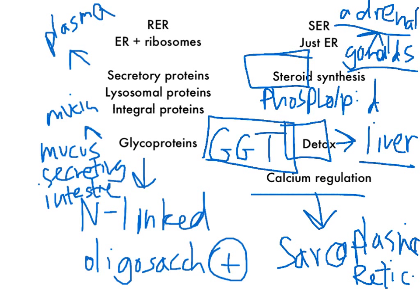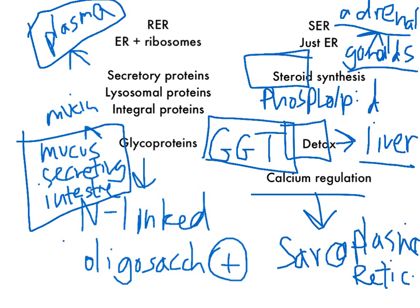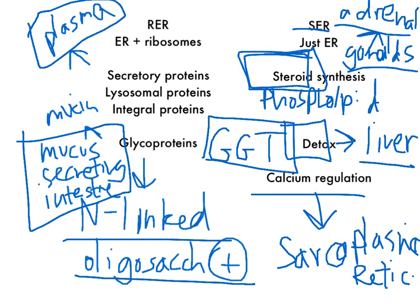Quick review: the RER has ribosomes and makes proteins outside the cell — secretory proteins, lysosomal proteins, and integral proteins. Plasma cells are an example for secretory proteins like antibodies; mucus-secreting cells for glycoproteins. Glycoproteins are made via N-linked oligosaccharide addition. RER in neurons forms Nissl bodies, which create choline acetyltransferase and peptide neurotransmitters. Free ribosomes make cytosolic and organellar proteins. The SER has no ribosomes: it handles steroid synthesis (adrenal glands and gonads), phospholipid synthesis, detox in the liver via the microsomal CYP system with GGT as a marker, and calcium regulation via the sarcoplasmic reticulum in muscle cells.